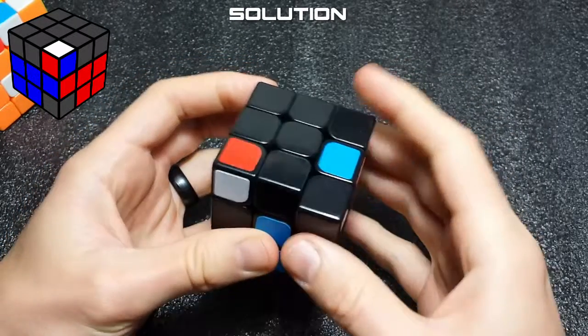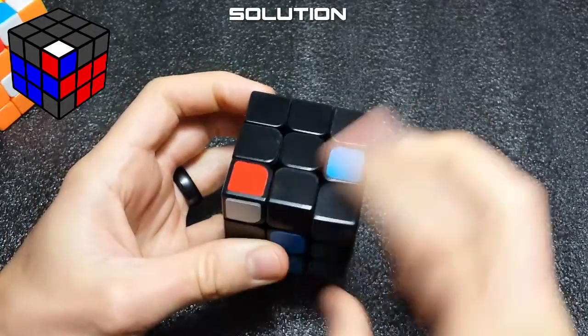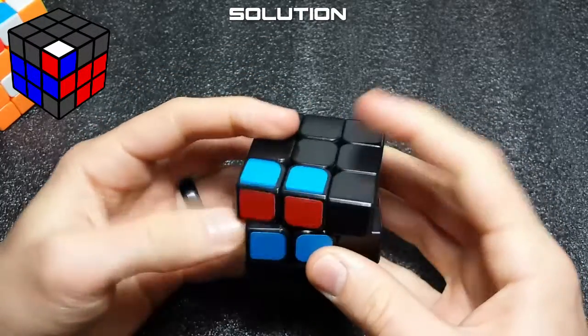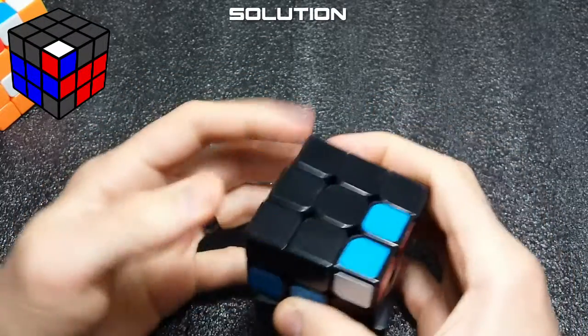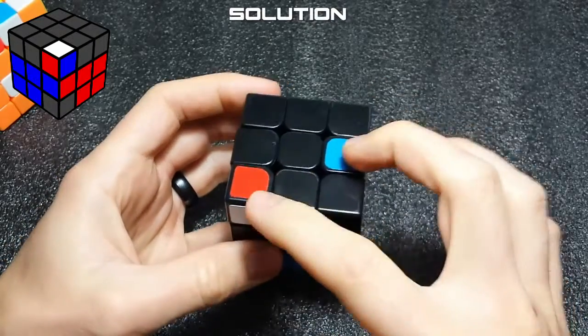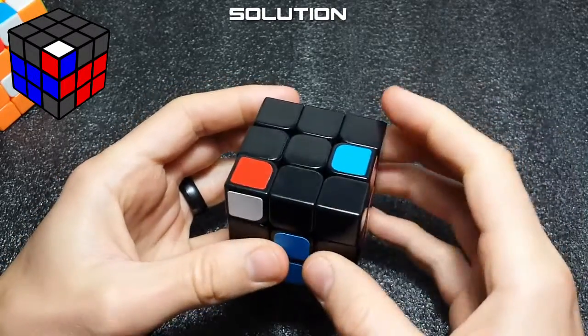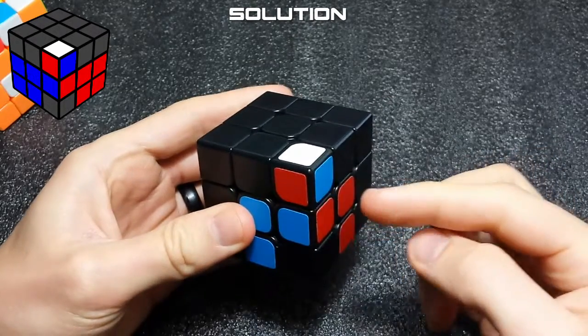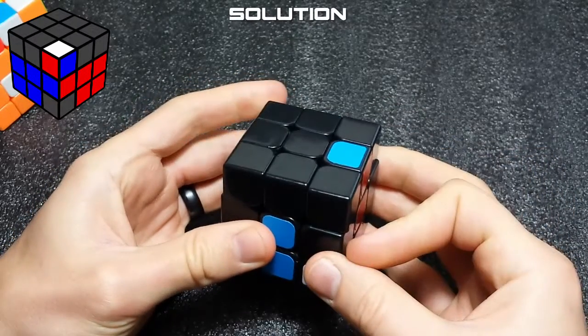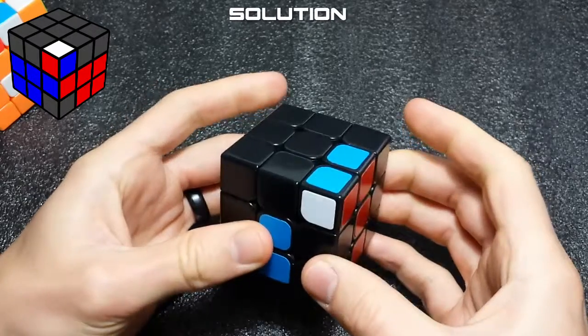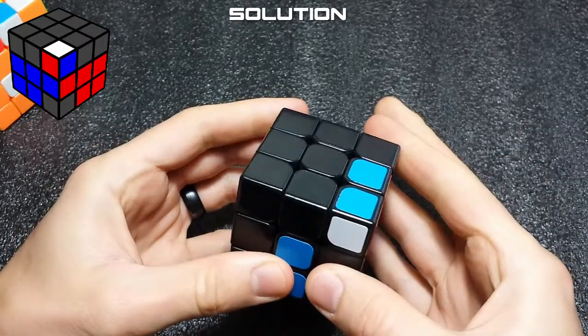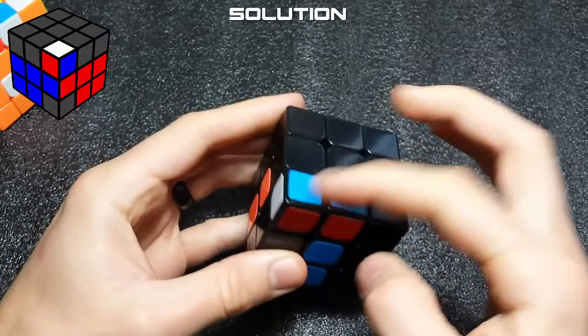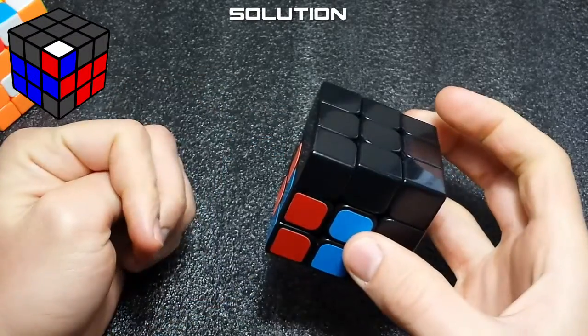If you do two sexy moves it creates the easy case, but now we have a non-oriented easy case so you got to use your thumb. If you're not comfortable with thumb moves or you don't like this front insertion, then what you do is the anti-sexy move: one anti, two anti, and then now you have this case.